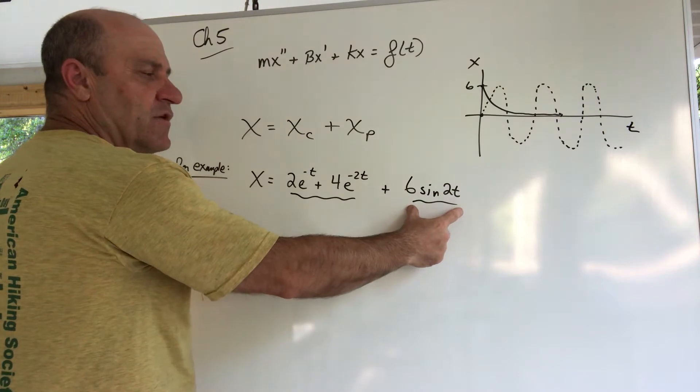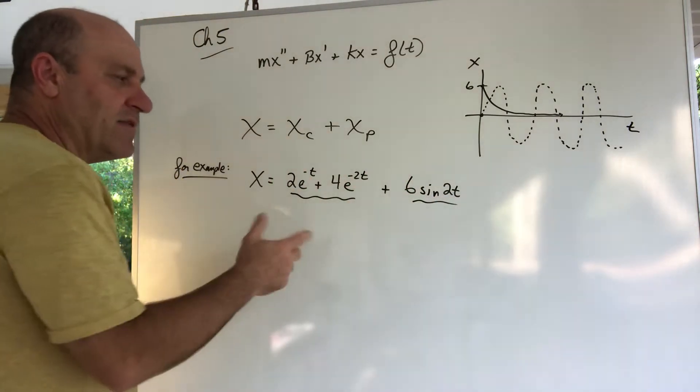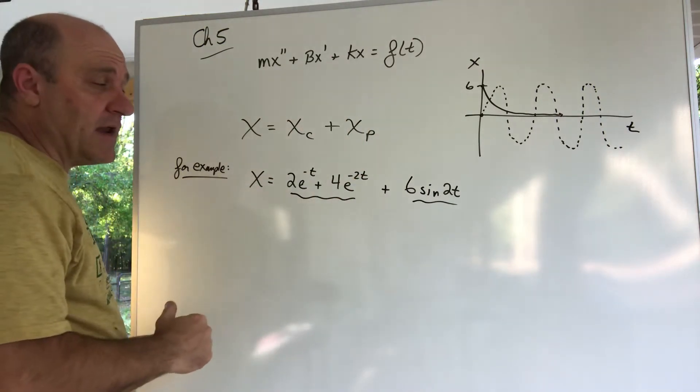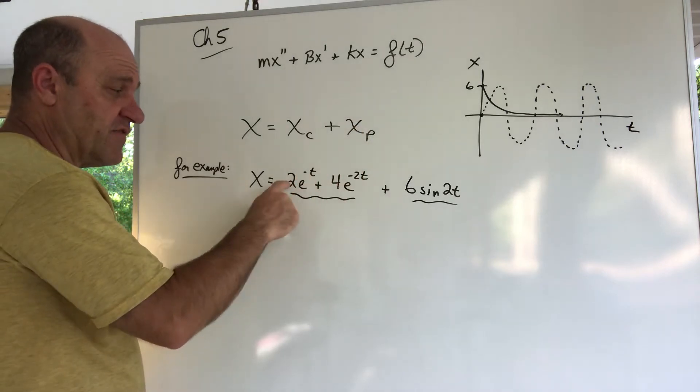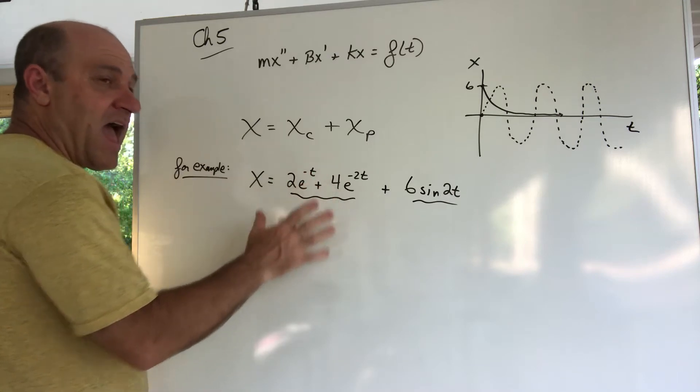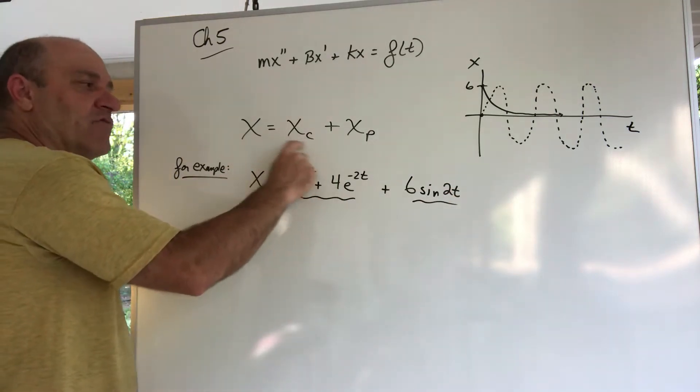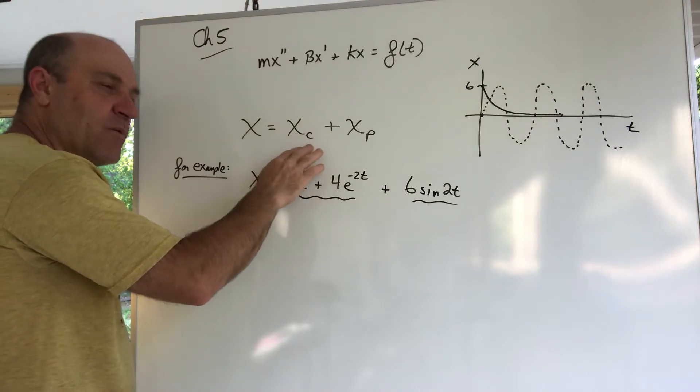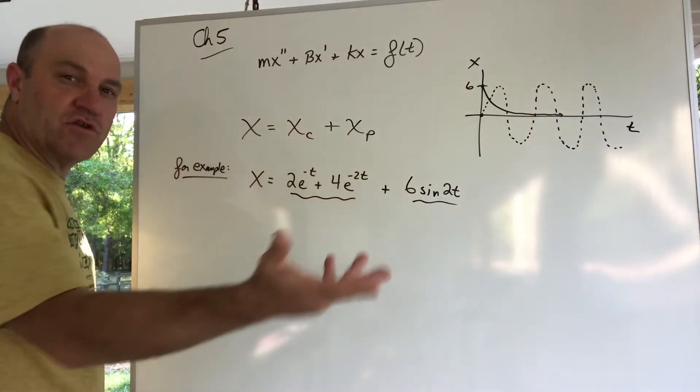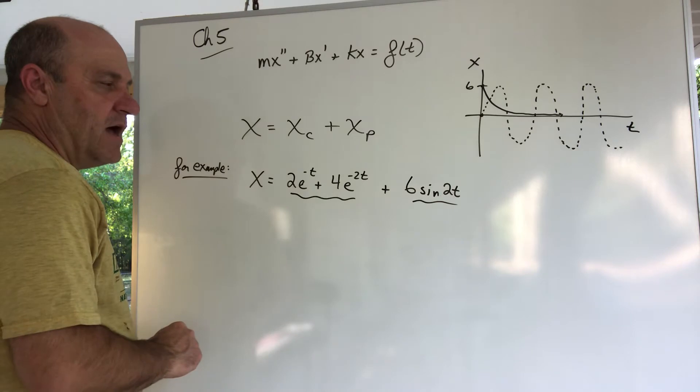This is my solution x. By the way, there would have been a c1 and c2 here and there would have been initial conditions, and I would use those initial conditions to find c1 and c2. Make sure you realize you got to find c1 and c2 after you find x, not back on the xc. The c1 and c2 are on the xc but you have to wait till you have the entire x before you can use your initial conditions.